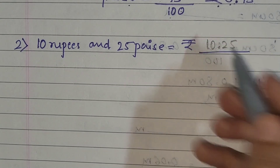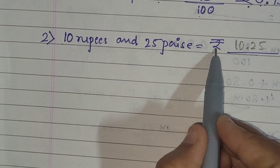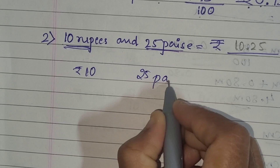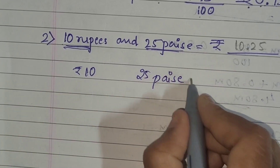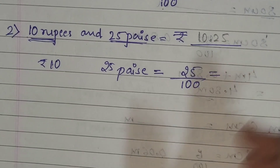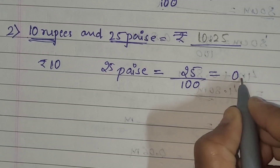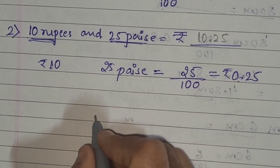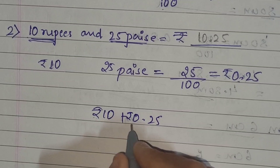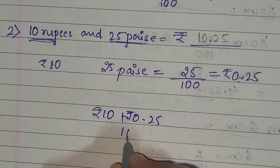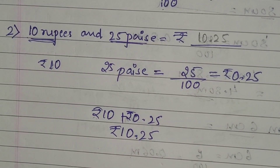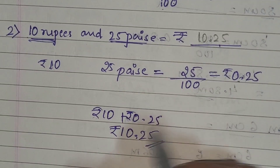Using the alternative method: we already have 10 rupees, so leave that as it is. Now convert 25 paisa into rupees: 25 divided by 100 equals 0.25 rupees. Then add 10 rupees plus 0.25 rupees to get 10.25 rupees. So directly you can write 10.25 rupees, or you can solve it step by step — both methods give the same answer.